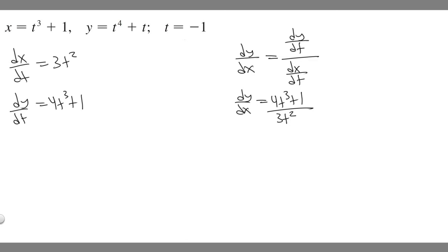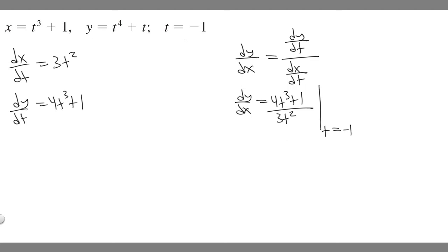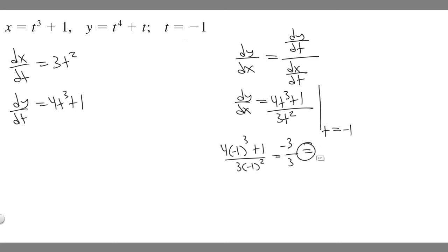Now we're going to evaluate dy/dx at t equals minus 1, since that's the point we're working with — the number we get will be the slope of our tangent line. Plugging in minus 1: we get 4 times minus 1 cubed plus 1 over 3 times minus 1 squared. Minus 1 squared is 1 times 3 is 3. Minus 1 cubed is minus 1, times 4 is minus 4, plus 1 is minus 3. So minus 3 over 3 is minus 1. That's the slope of our line.